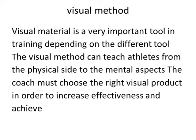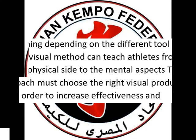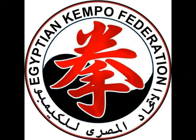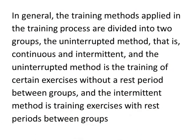The training methods applied in the training process are divided into two groups: the uninterrupted method, which is continuous, and the intermittent method. The uninterrupted method involves training certain exercises without a rest period between groups, while the intermittent method involves training exercises with rest periods between groups.